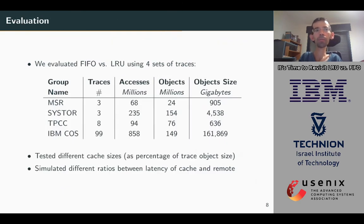Except from our data, we also evaluated on more traditional workloads. MSR are classic caching traces of block storage, coming from Microsoft Cambridge. Sister traces from FIU storage virtual machine system, and generated TPC Sister traces. You can find all of them on SNIA website. We simulated each trace with different cache sizes and different ratios between the latencies of the local cache and the remote storage.